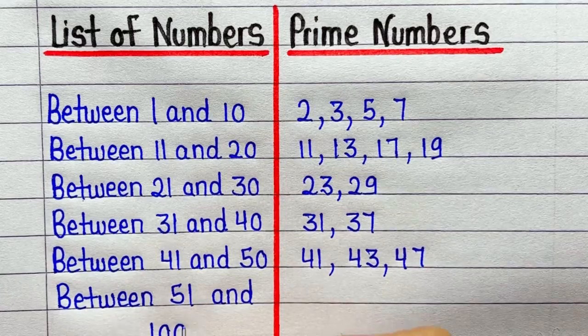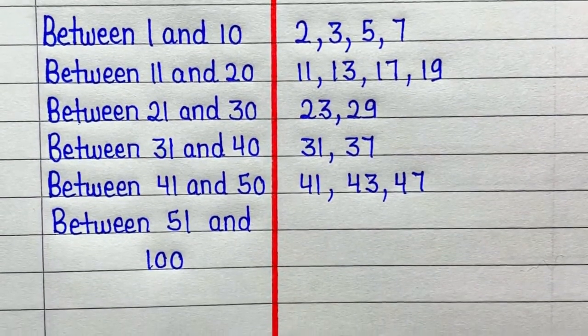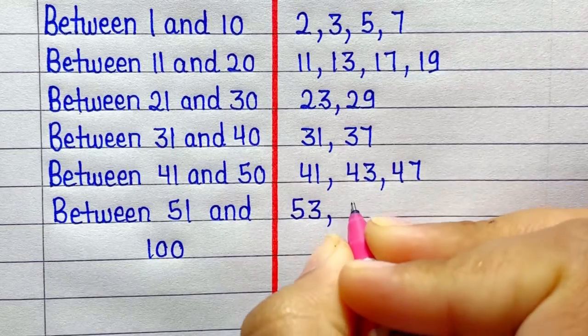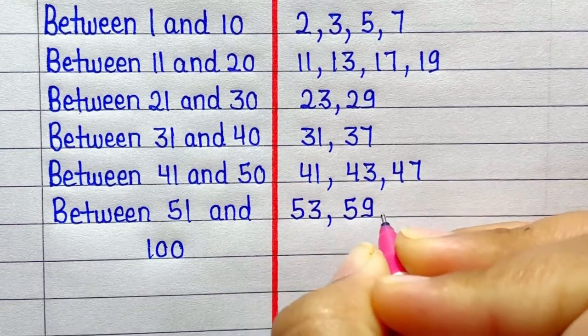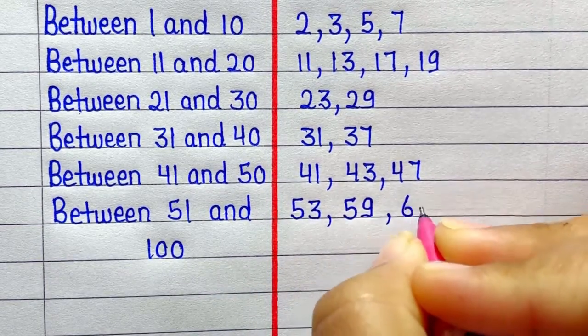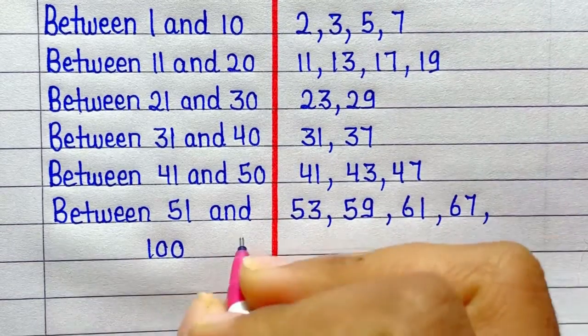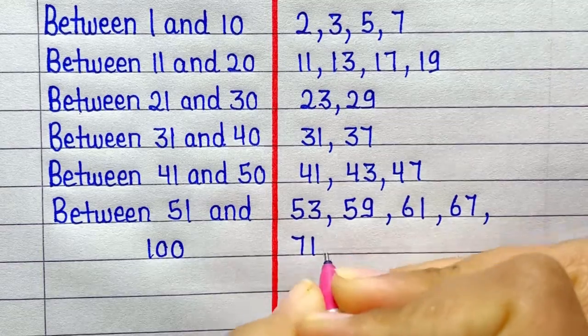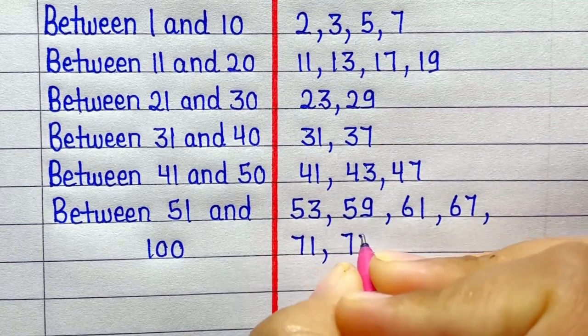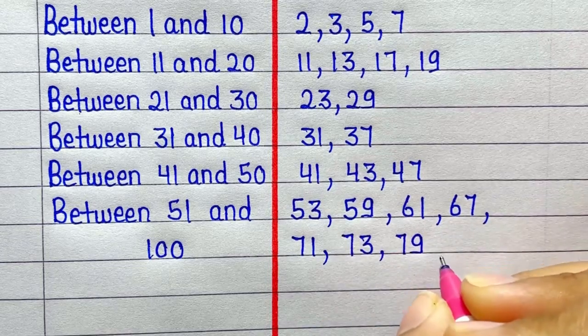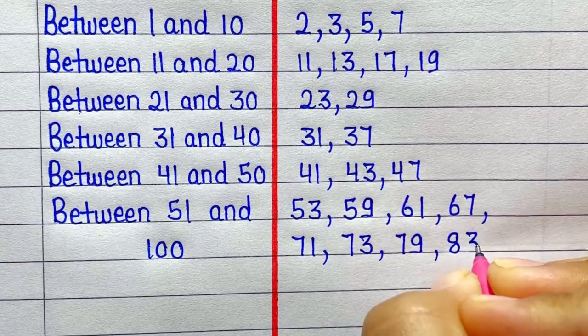Last is prime numbers between 51 and 100 are 53, 59, 61, 67, 71, 73, 79, 83, 89, and 97.